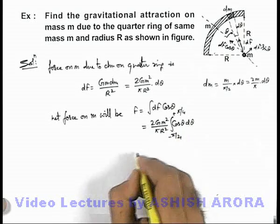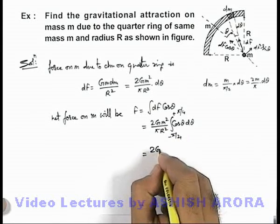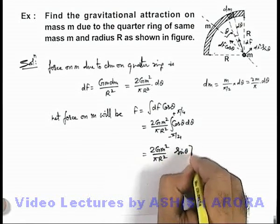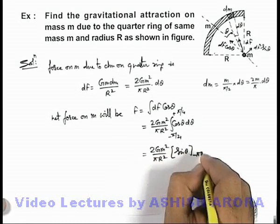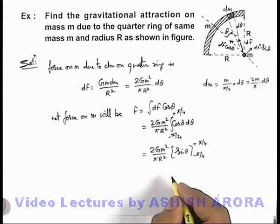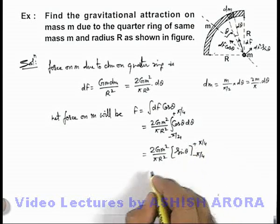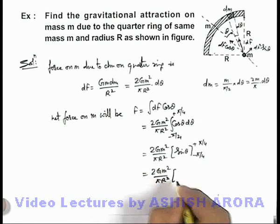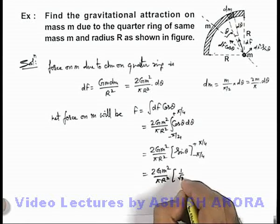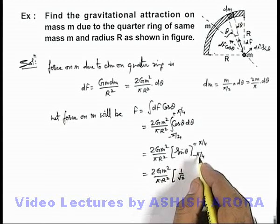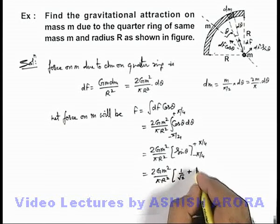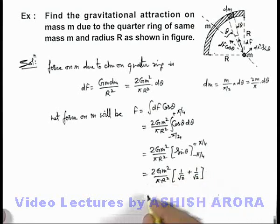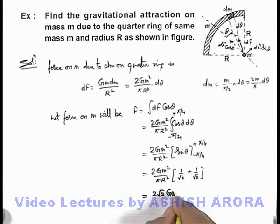So here on integrating cos θ we'll be getting 2Gm²/(πR²) which is a constant, and it is sin θ. And we substitute the limits from -π/4 to +π/4, which can be written as 2Gm²/(πR²). On substituting limits, sin(π/4) is 1/√2 minus sin(-π/4) will be plus 1/√2, and this can be written as √2.